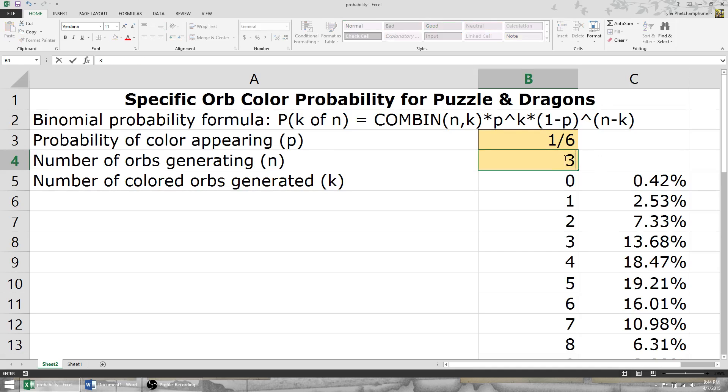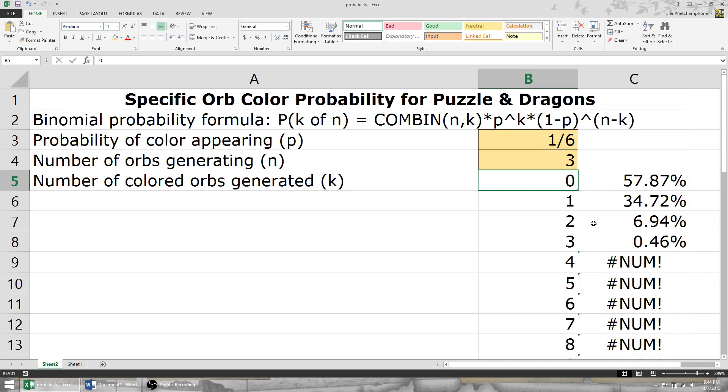Let's say we eliminate three orbs. We just eliminate three heart orbs and we stall. What's the percent chance of generating two or more purple orbs?